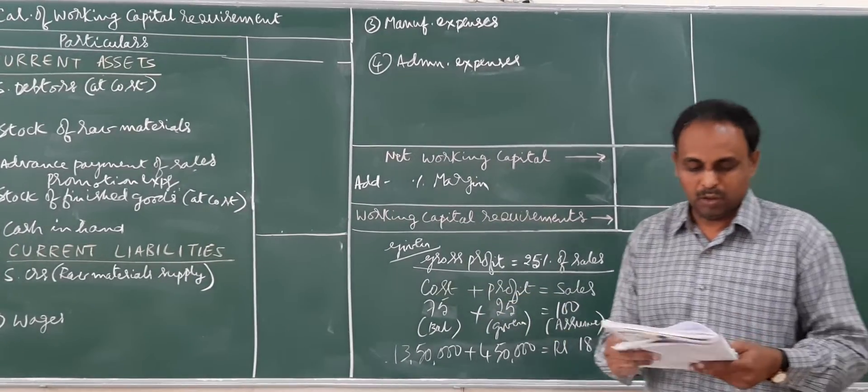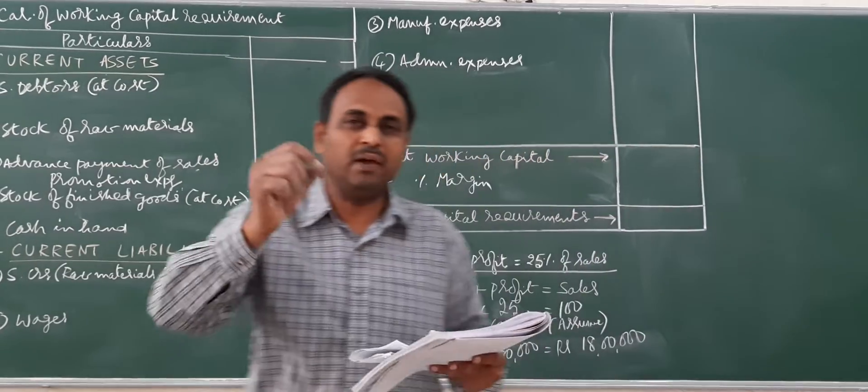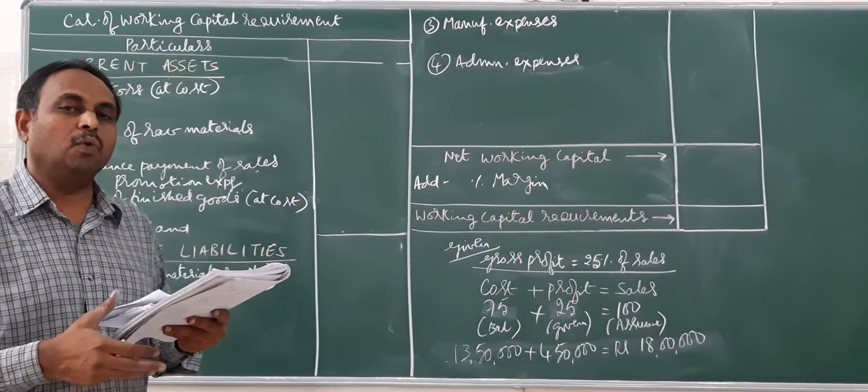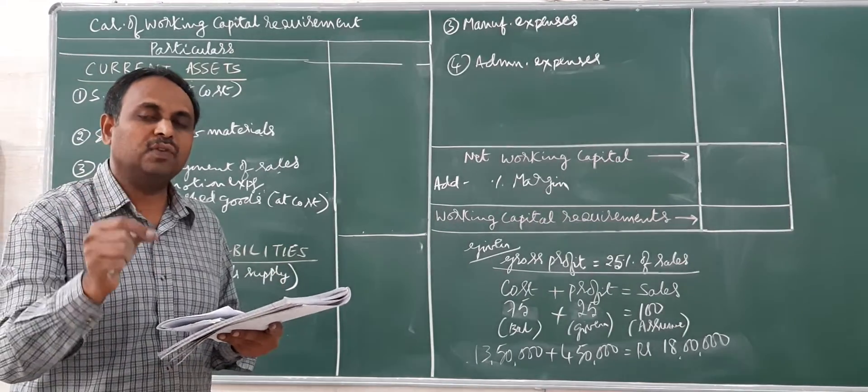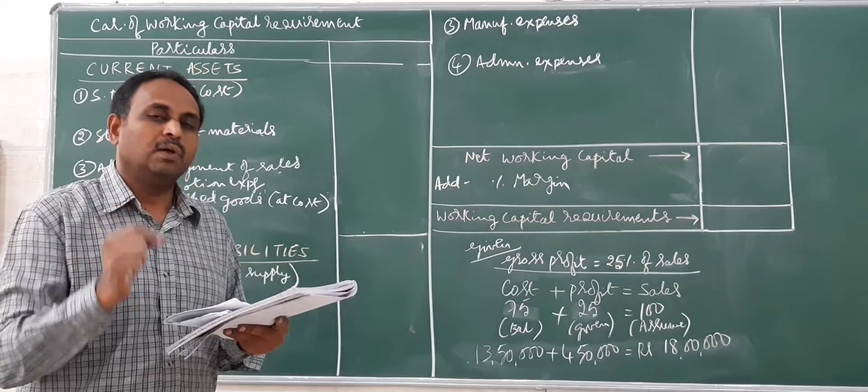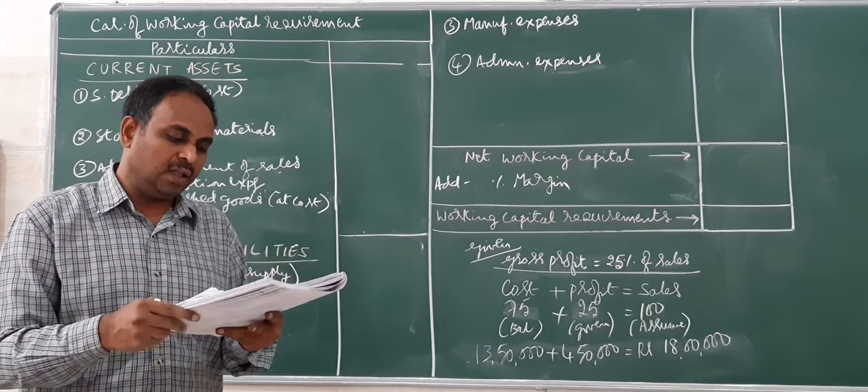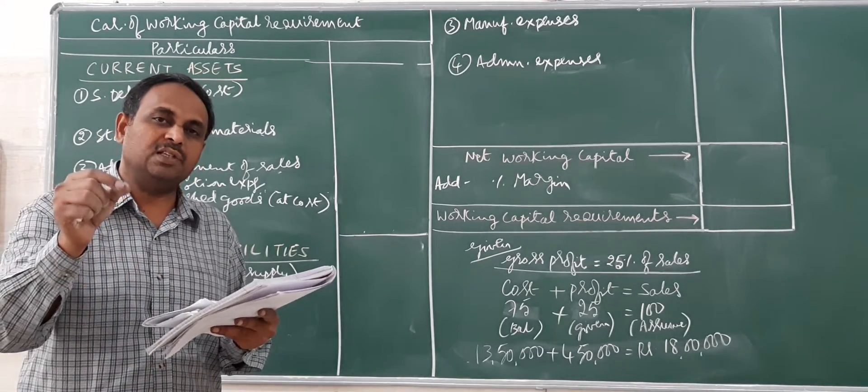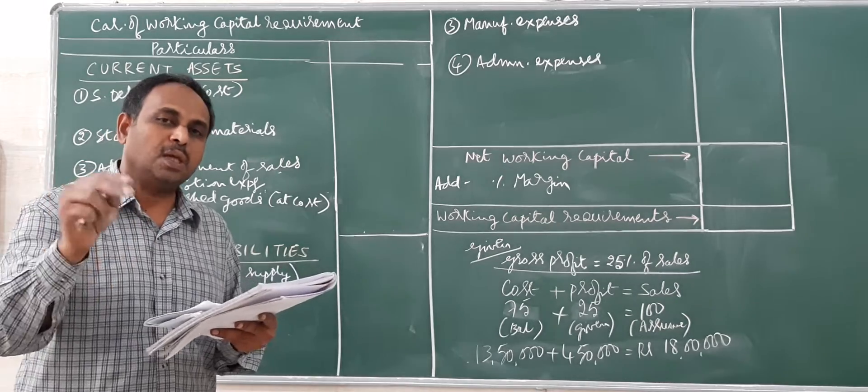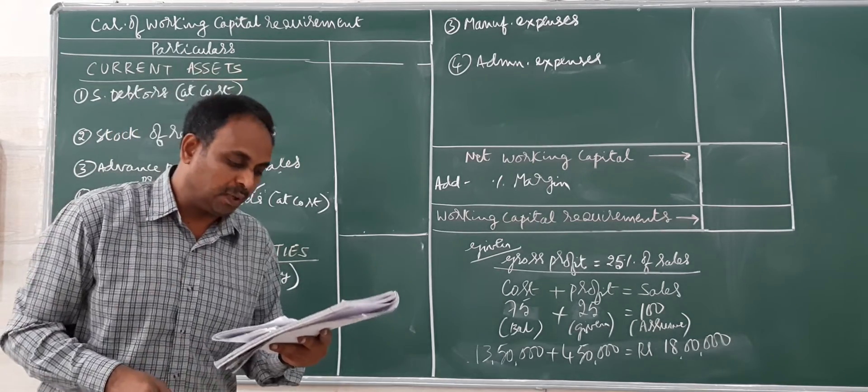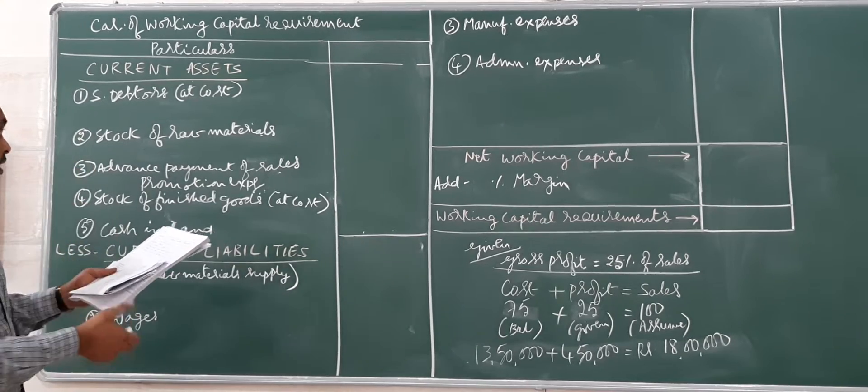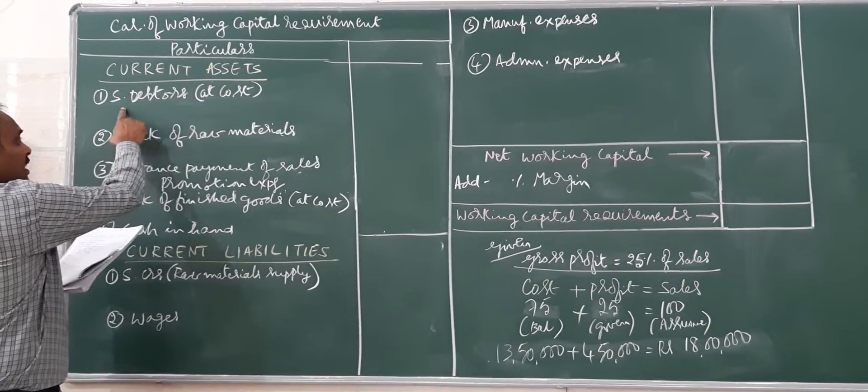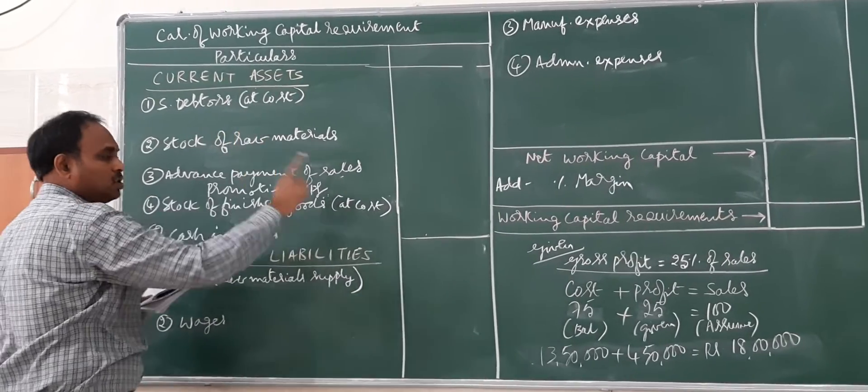We have to start the information one by one from the problem. Depreciation is considered as one of the costs of production in the manufacturing expenses; no separate entry is made. First is sales with two months credit, so sales is connected to debtors at cost.